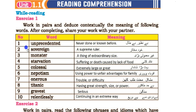Number one is 'unprecedented' — never done or known before, be-nazeer. Number two is 'sovereign' — supreme ruler. Number three is 'monster' — a thing of extraordinary size, ghair mamuli bari cheez. Number four is 'starvation' — faqa kashi, suffering or death caused by lack of food.